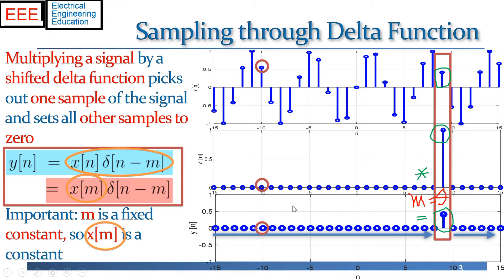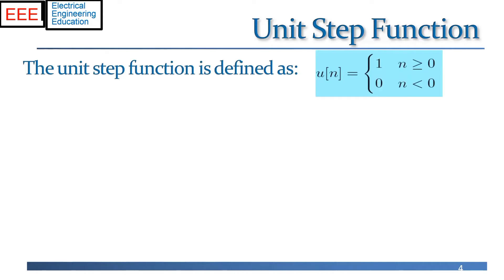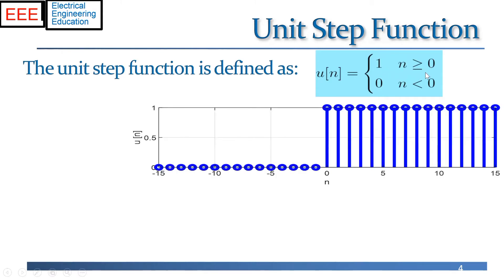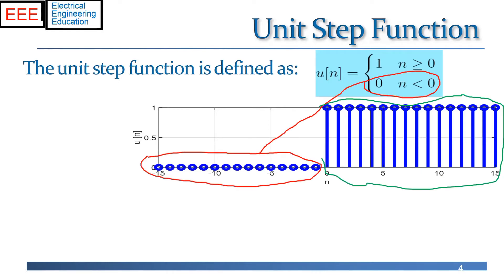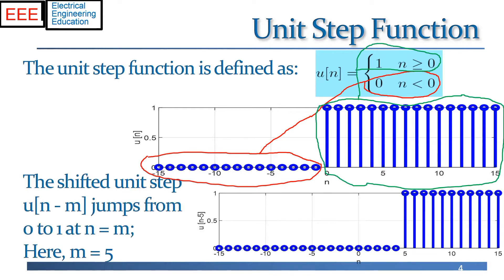So delta function sample. The unit step is maybe the second simplest signal. It's simply a signal that is zero for negative time and then takes a value one for positive time. And similarly to the delta function, if we shift the unit step by an integer m, then it will peak up not at the time point n equals zero, but at the time point m. Or in this case, we see m equals five.